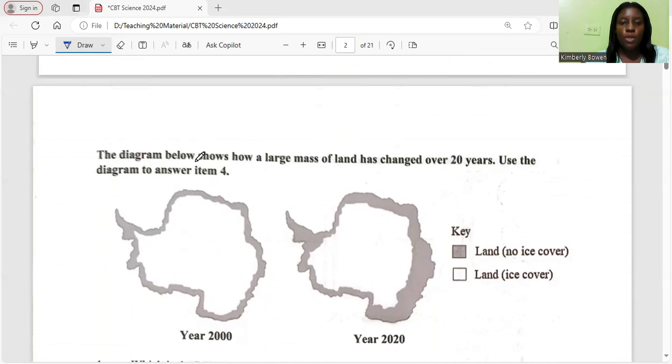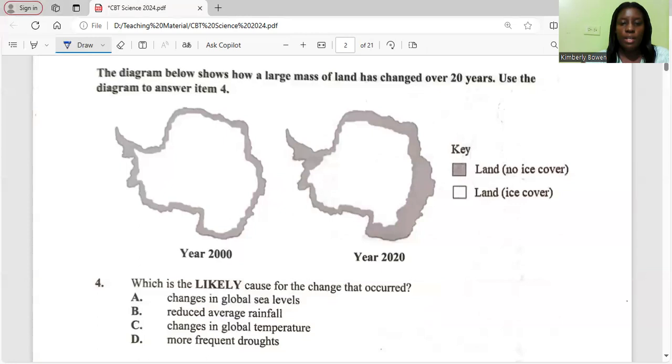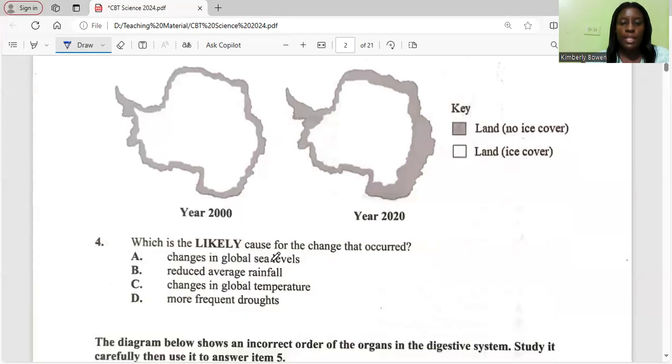The diagram below shows how a large mass of land has changed over 20 years. Use the diagram to answer item 4. Which is likely the cause of the change that occurred? It's changes in global temperature. What is happening is the ice is melting and that's why we're seeing more land over the 20 year period.